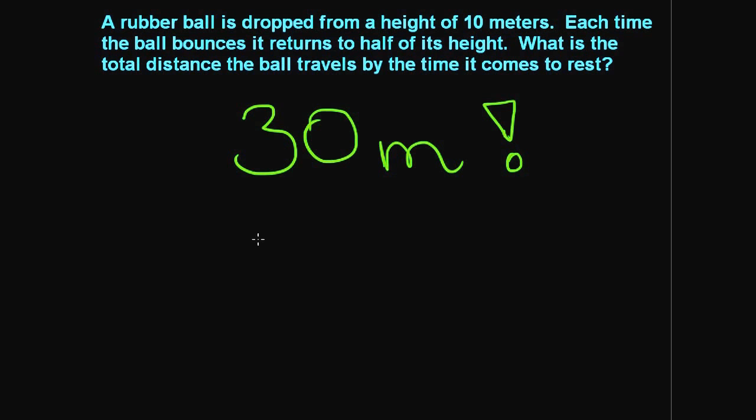So if a rubber ball is dropped from a height of 10 meters, each time the ball bounces it returns to half of its height, what is the total distance the ball travels by the time it comes to rest? Through geometric series we are able to show that the total distance the ball travels before rest is 30 meters.